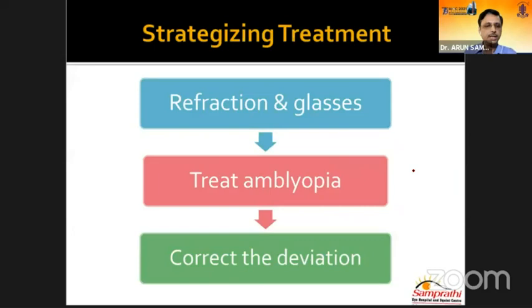Coming to the treatment: the first step is proper cycloplegic refraction and giving glasses. Next, treat the amblyopia, and then finally correct the deviation. Thank you.